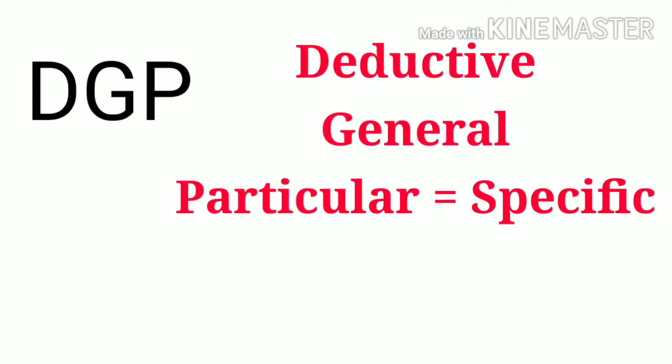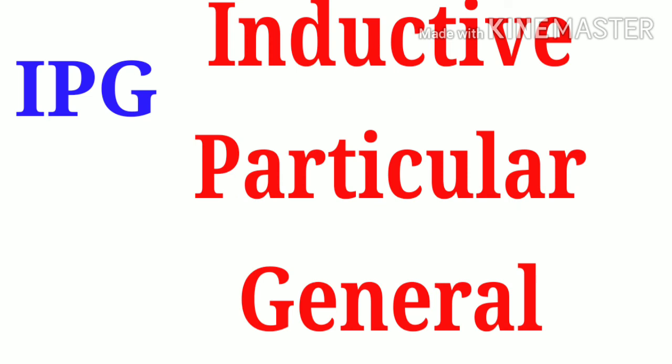Here is an easy method to remember: deductive research goes from general to specific, where specific means particular. Take the first letters — D for deductive, G for general, P for particular (specific) — giving DGP, which is a rank in the police service. So DGP stands for deductive, general to specific. For inductive, it is IPG — inductive, specific to general.